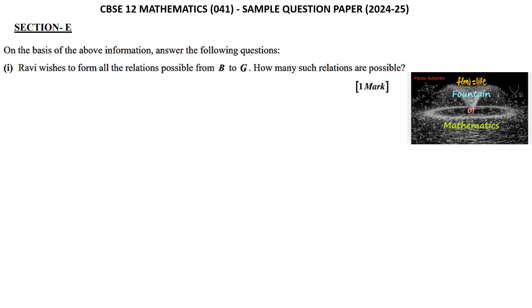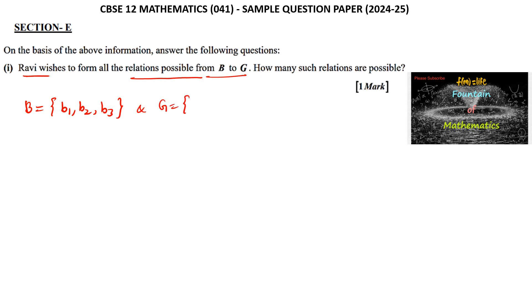On the basis of the above information, answer the following questions. First: Ravi wishes to form all the relations possible from B to G. So set B = {B1, B2, B3} and set G = {G1, G2}.